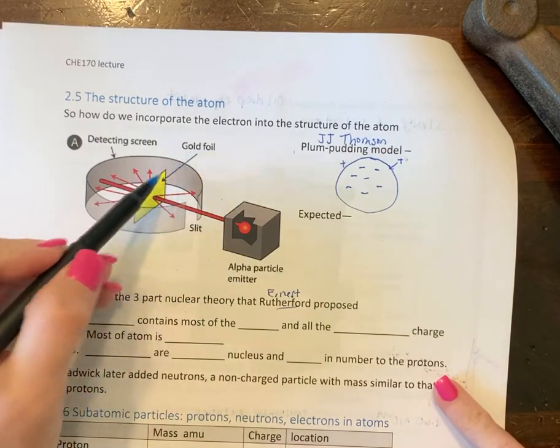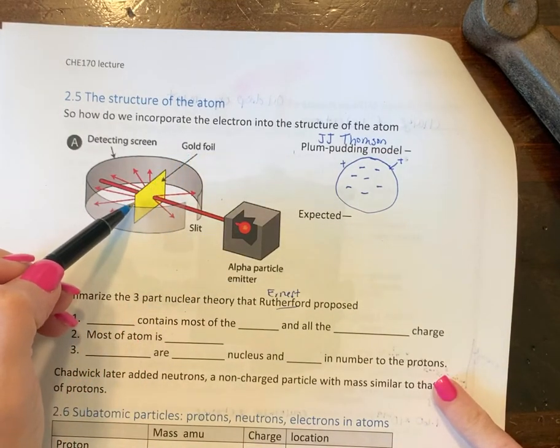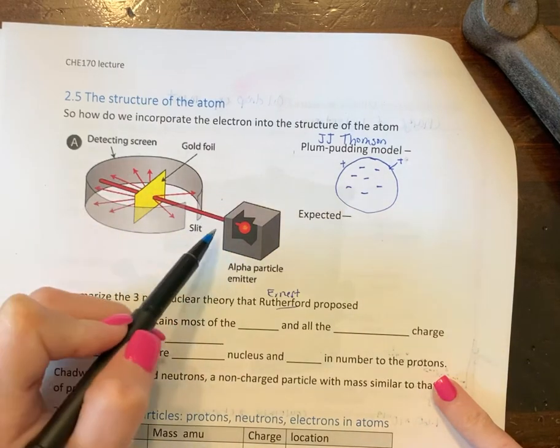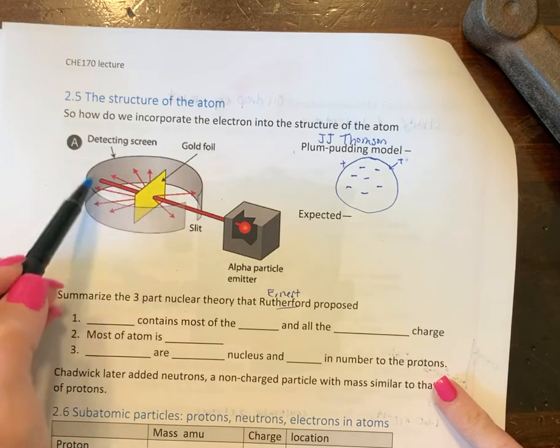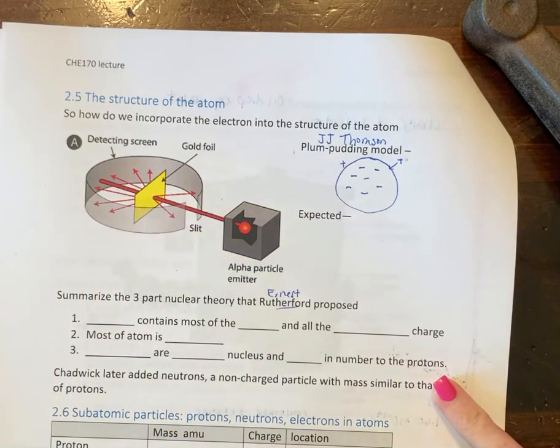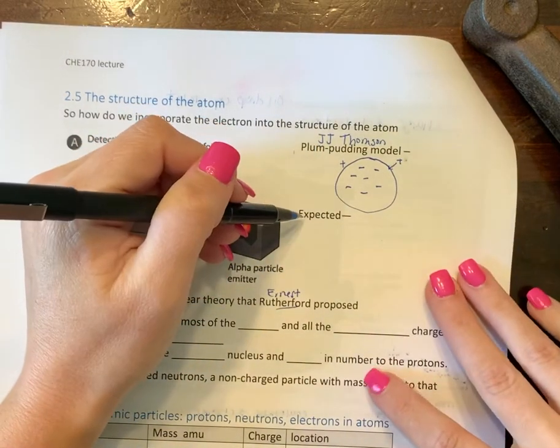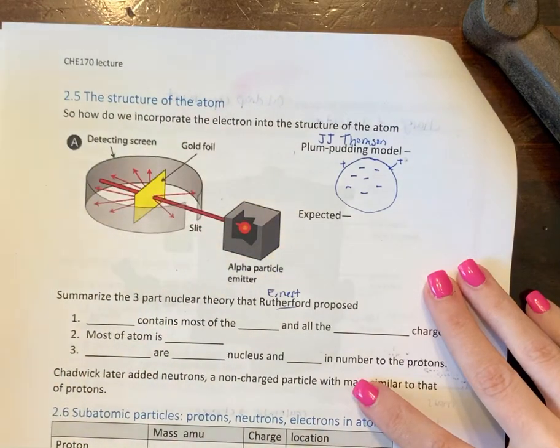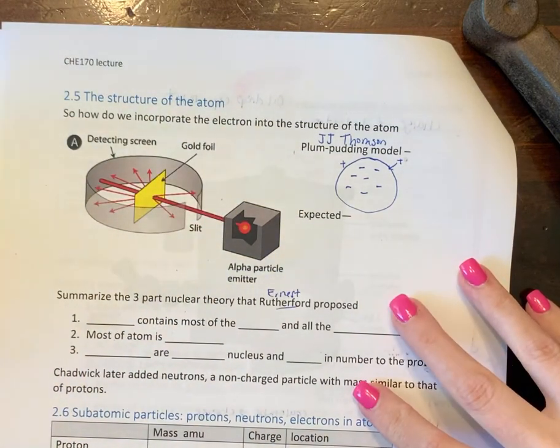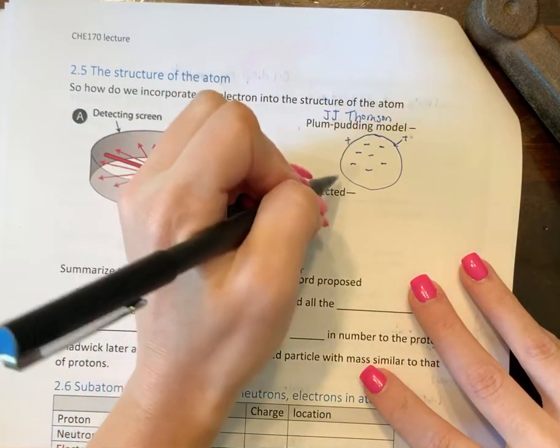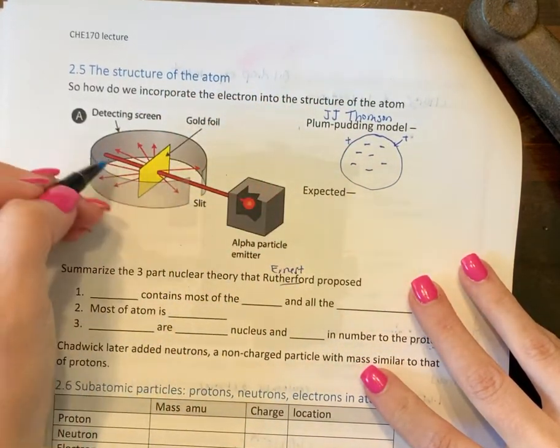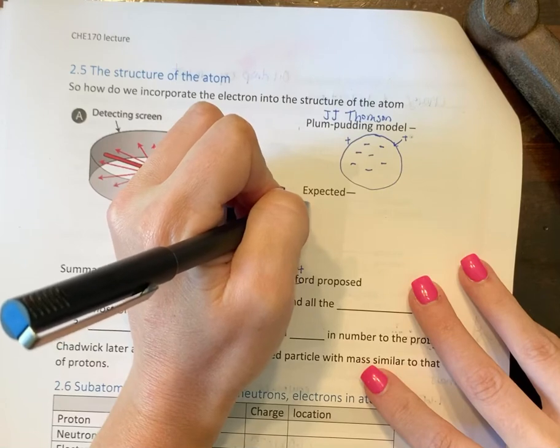He decided to take this gold foil, must have been wealthy, and he shot some stuff through it and had this screen here. He said that if the plum pudding model is correct, because this is what scientists do, they say, well hey, if it behaves this way, this is what should happen. Then all of these particles should—